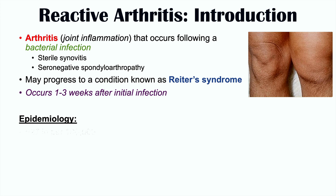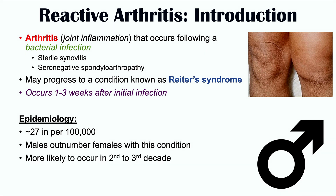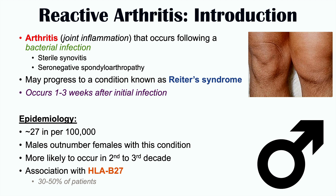In terms of epidemiology, reactive arthritis is estimated to affect up to 27 in 100,000 people. Males outnumber females with this condition, as they do with other seronegative spondyloarthropathies. It's more likely to occur in the second to third decade of life, and it has an association with HLA-B27. Patients who have HLA-B27 are more likely to develop this condition.